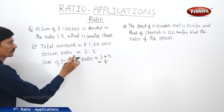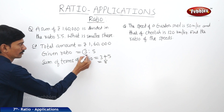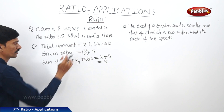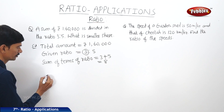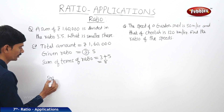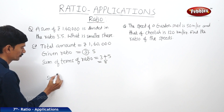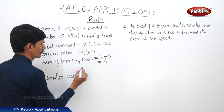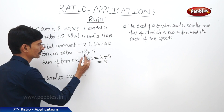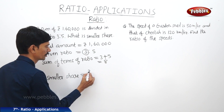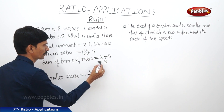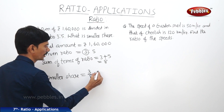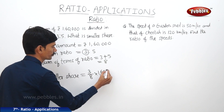Now in this, the smaller term is 3. So we use 3 to find the smaller share. Smaller share equals to the smaller term in the given ratio, which is 3, divided by the sum of terms, which is 8, multiplied by 1,60,000 rupees.